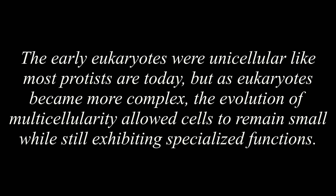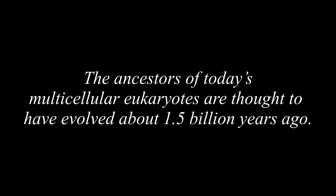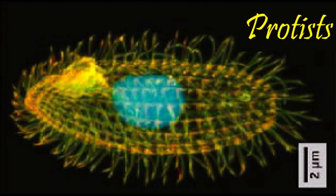The early eukaryotes were unicellular, like most protists are today, but as eukaryotes became more complex, the evolution of multicellularity allowed cells to remain small while still exhibiting specialized functions. The ancestors of today's multicellular eukaryotes are thought to have evolved about 1.5 billion years ago. Now on to Section 13.3, Protists.